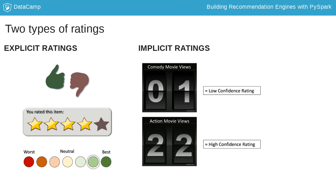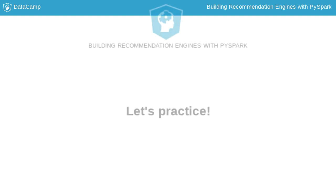represented by a 1, or not watched a comedy, represented by a 0. These types of ratings aren't nearly as rich, but they still can provide meaningful insight and still work perfectly fine with the ALS algorithm. Now let's look at some actual data.